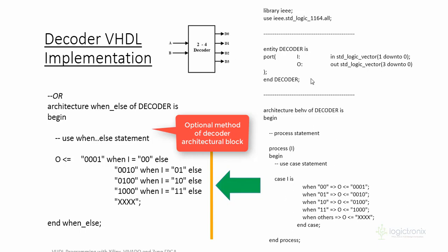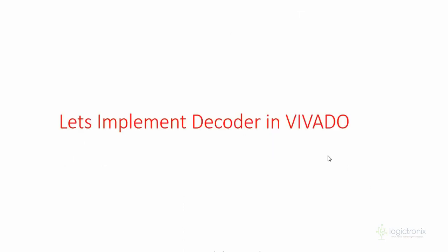So, these are actually two different methods for designing a 2-to-4 decoder. We are going to design and implement this decoder in Vivado, and then implement it on Zynq FPGA. Guys, we will have a Vivado session soon — meet you in another video. Thanks for watching.